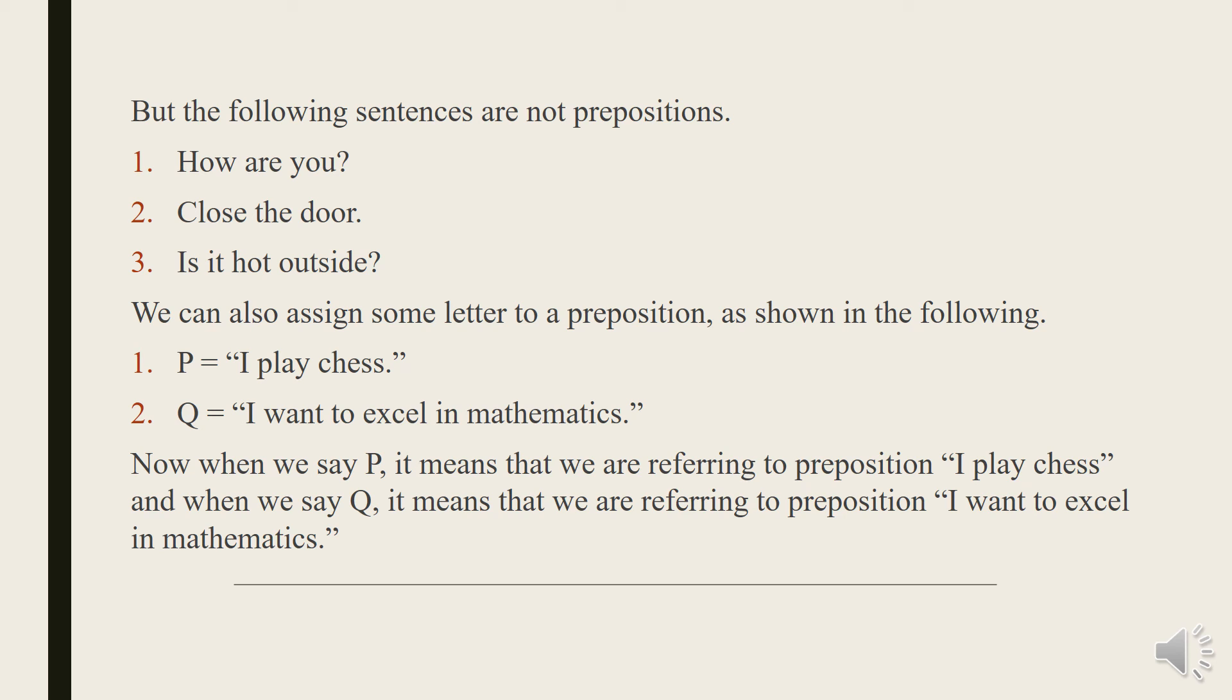Now, when we say P, it means that we are referring to preposition I play chess. And when we say Q, it means that we are referring to preposition I want to excel in mathematics.